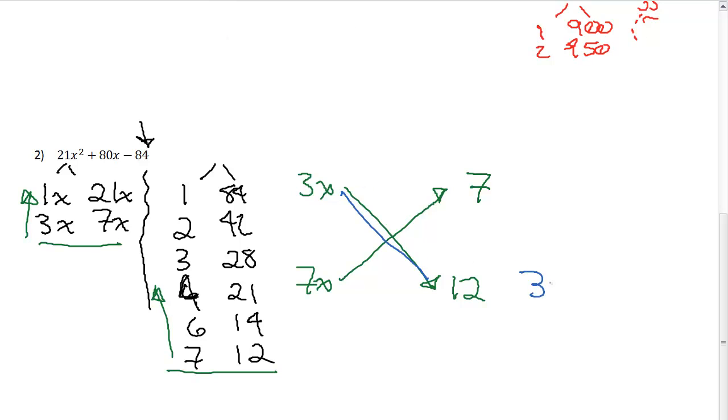So now I'm going to go ahead and follow my x. 3 times 12 is going to give me 36x. 7 and 7 is going to give me 49x. And is there a way that I combine those to get 80x? The answer to that is no, so that makes me sad. So the 7 and the 12 aren't going to work. So I'm going to get rid of that and the 7.